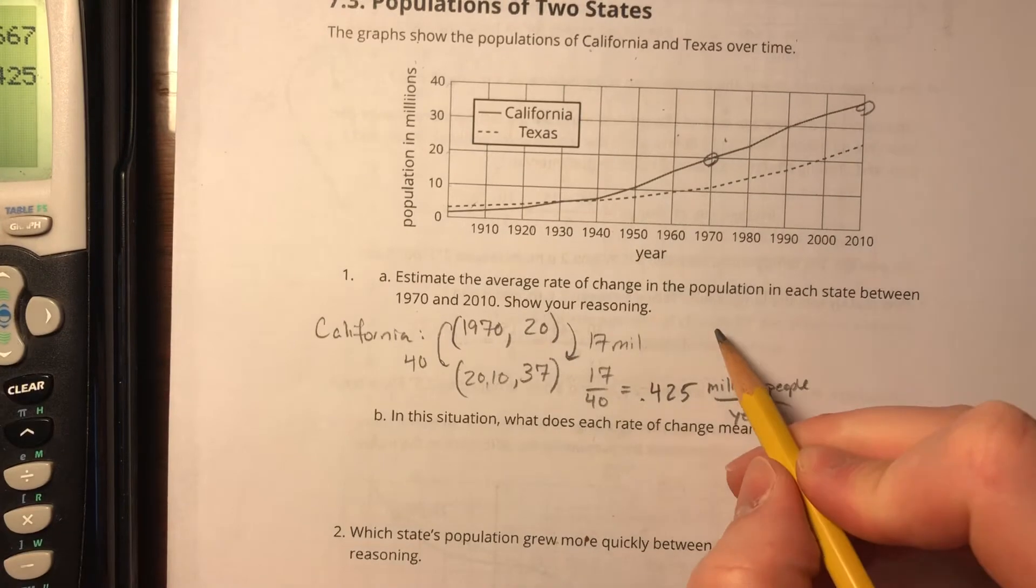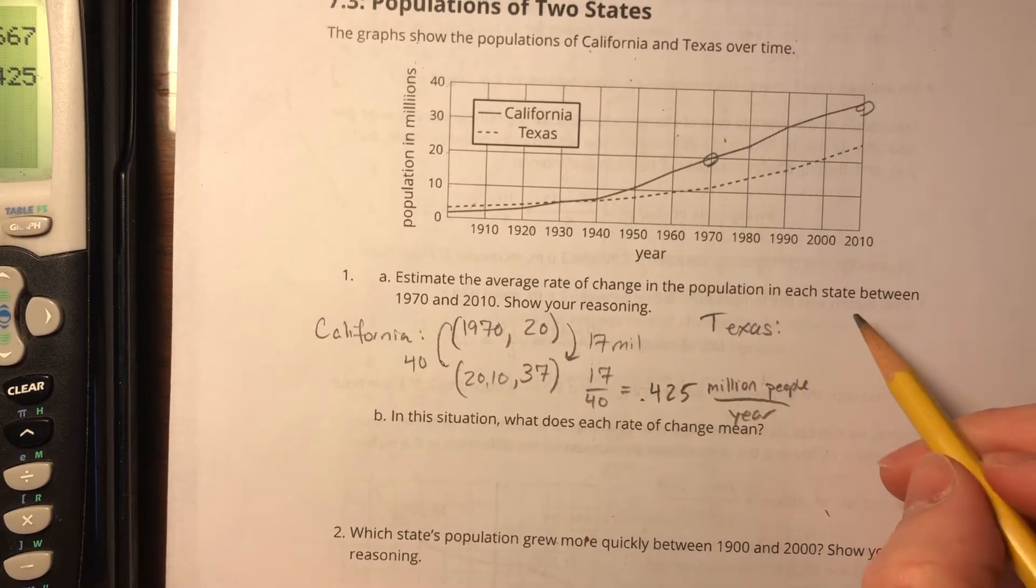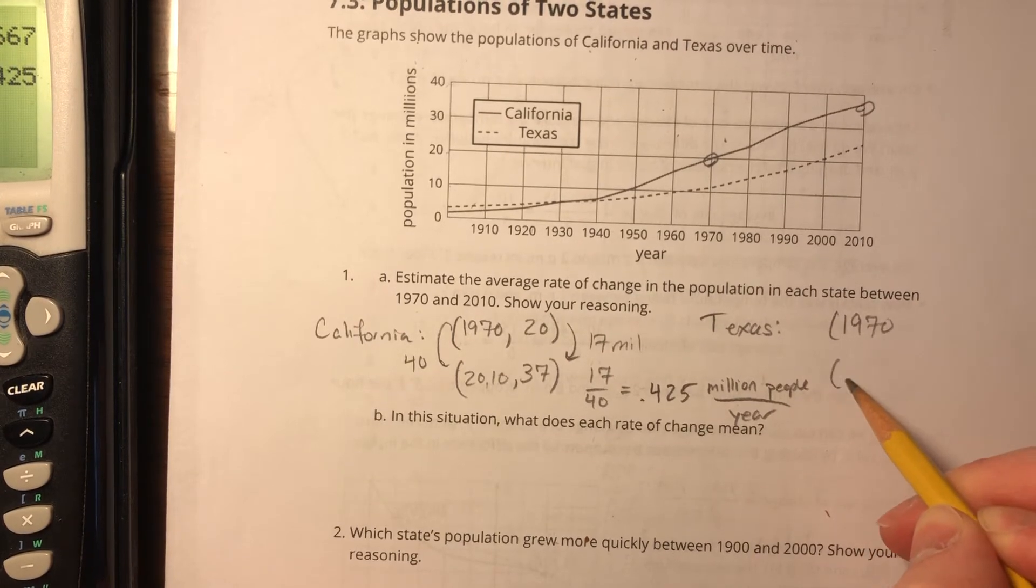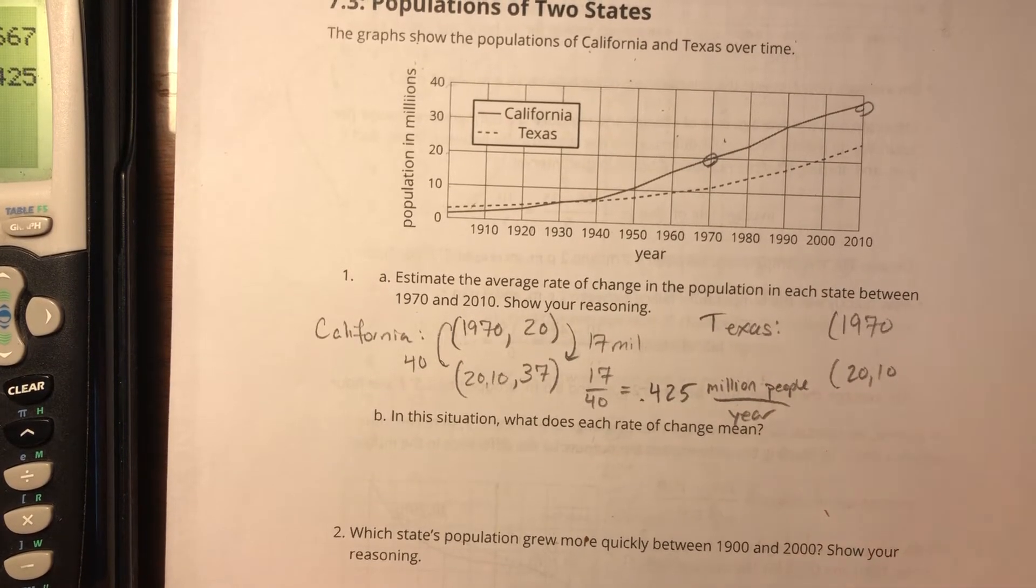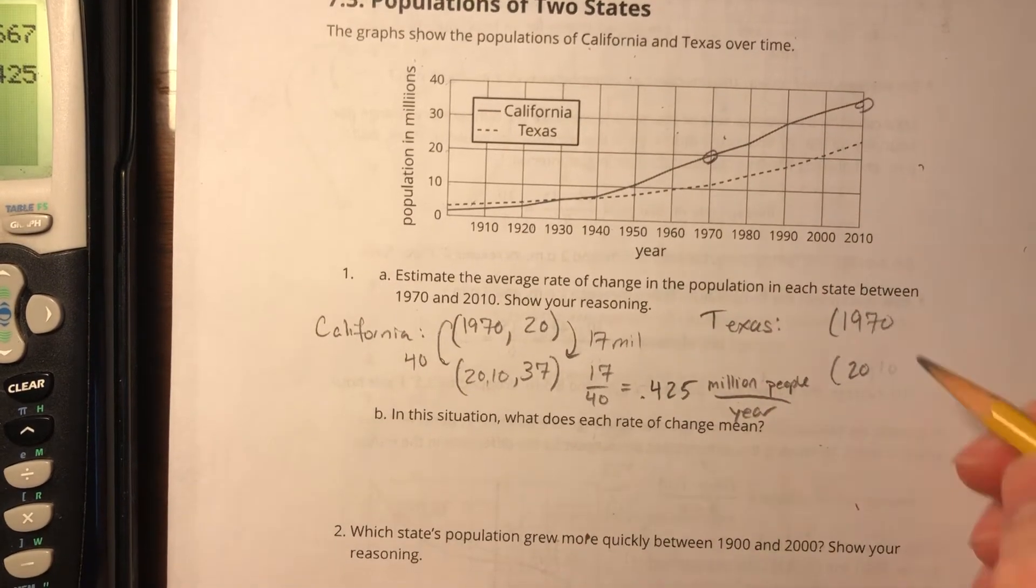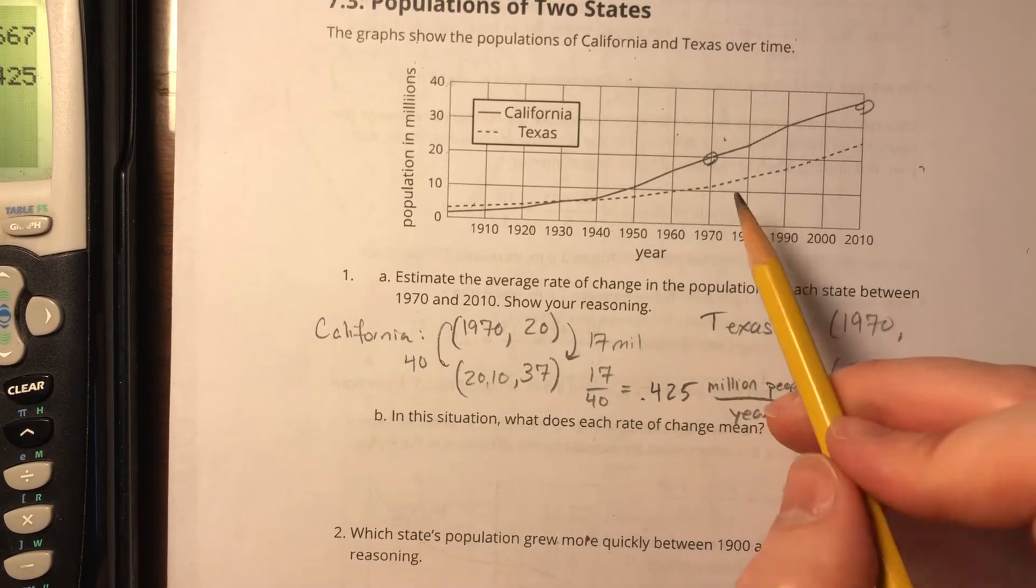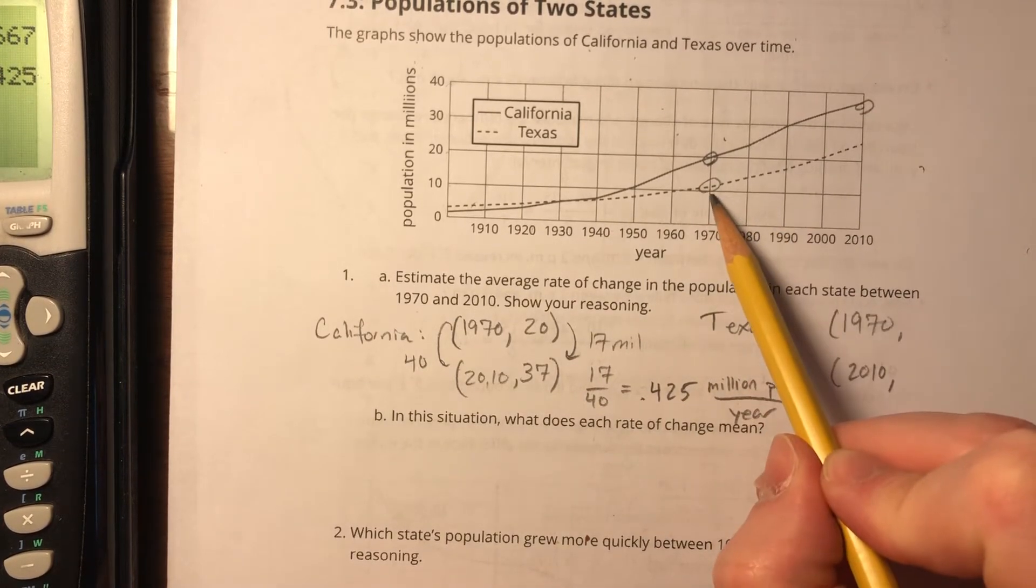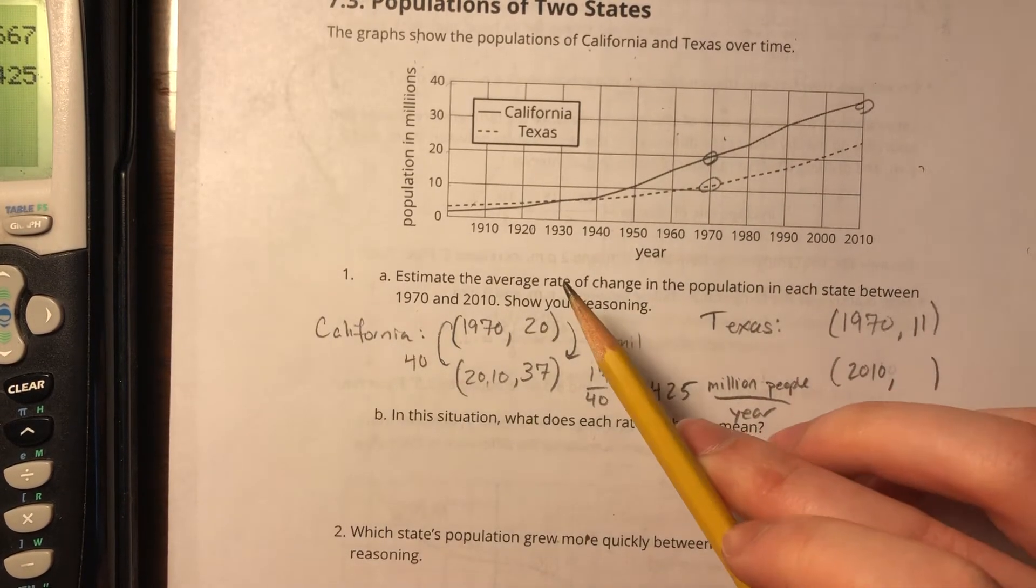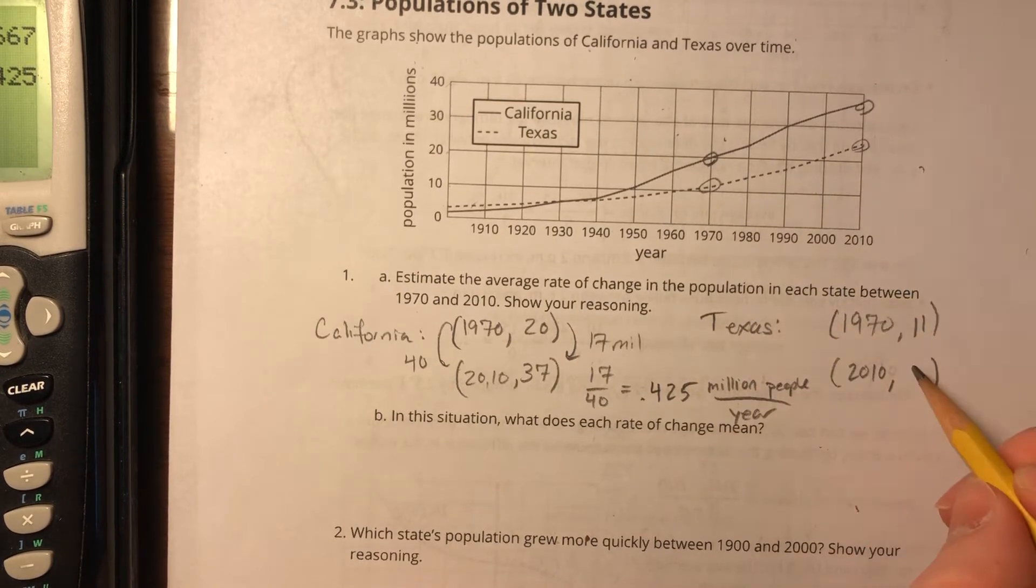I'm going to do the same thing with Texas. We already know that the x coordinates are going to be 1970 and 2010. I've done this twice now, going crazy. Now let's look at the y coordinates. I would estimate that looks like about 11 million in 1970. And in 2010, right there, that looks like about 25 million.